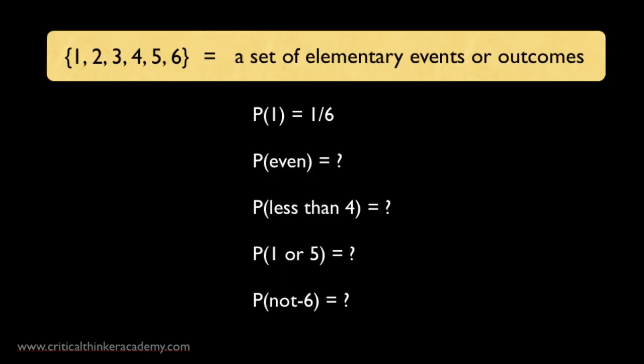Now, modern probability theory is a complicated beast, but here are some of the key ideas. You imagine some set of elementary events or outcomes. Let's assume there are only six, so there are six elementary outcomes or events. These could be the six sides of a dice.